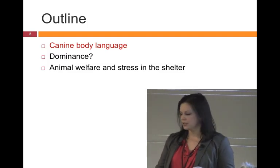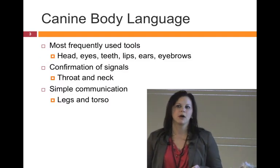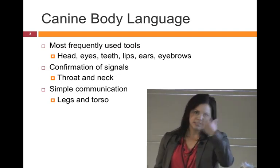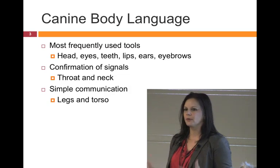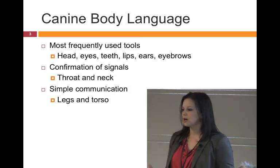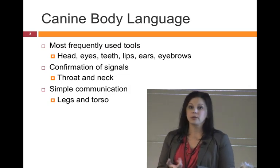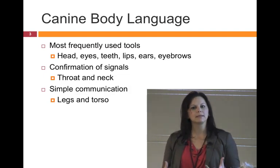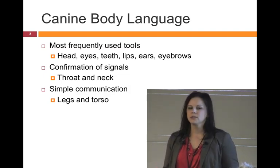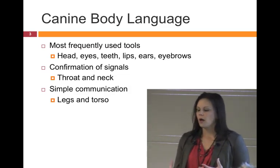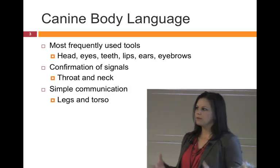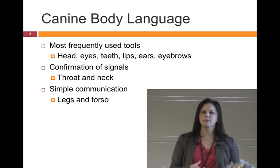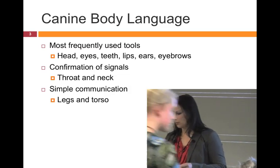Then we'll talk a little bit about animal welfare and stress in the shelter. Body language with dogs is going to hold true for most species of animals. It's the most clear signals they're going to give, with the most information starting up around the head and face — eyes, ears, teeth, lips, eyebrows, face wrinkles. Then we look at the rest of the body to confirm what we think that animal is trying to say — the neck, shoulders, torso, and legs.